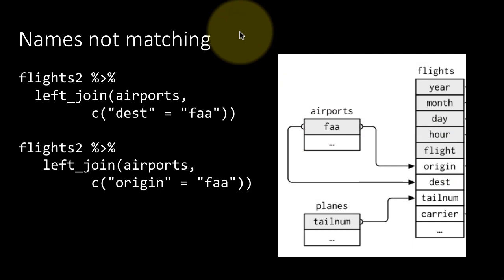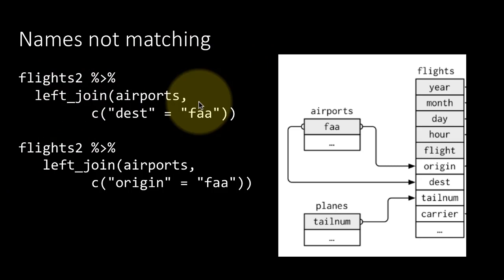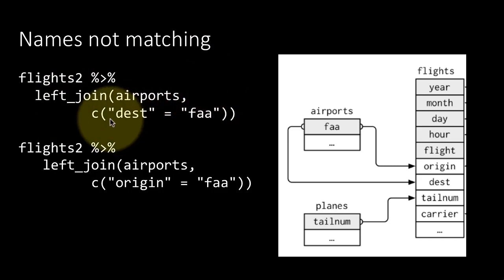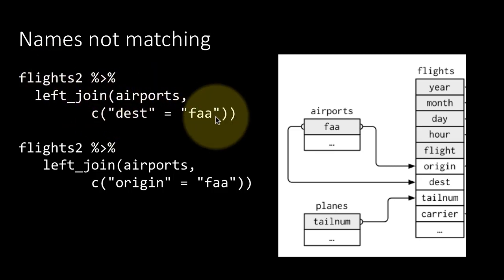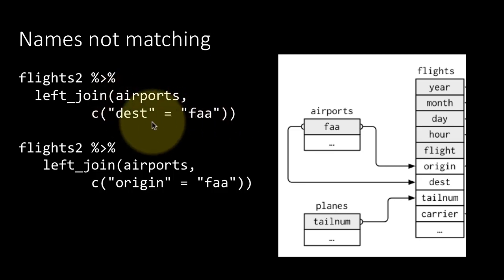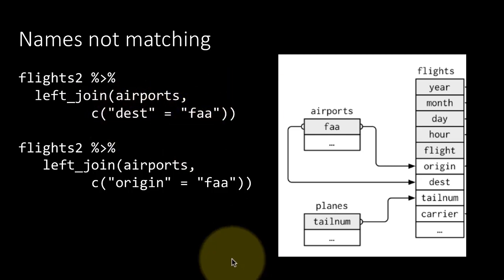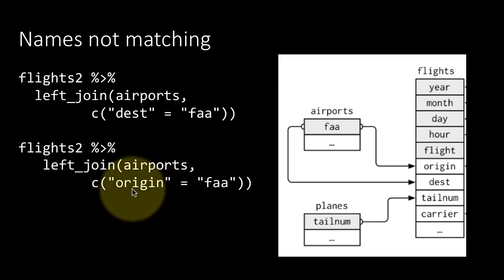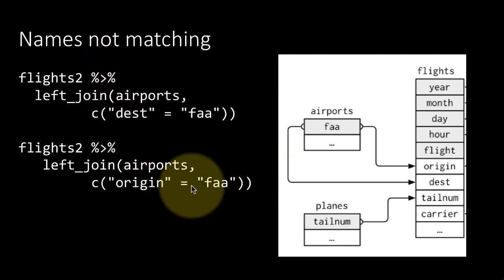Sometimes the columns have different names in different tibbles. If you are trying to join by a particular column but the columns have different names, the syntax you use is: say flights2 left_join airports, by = c(dest = 'faa'). That means in flights2 the column is called 'dest', and in airports the column is called 'faa'. So you can explicitly mention it this way. Alternatively, if you want to join by the origin column, you would say origin = 'faa'. Even if column names don't match, you can use this syntax to perform the join.